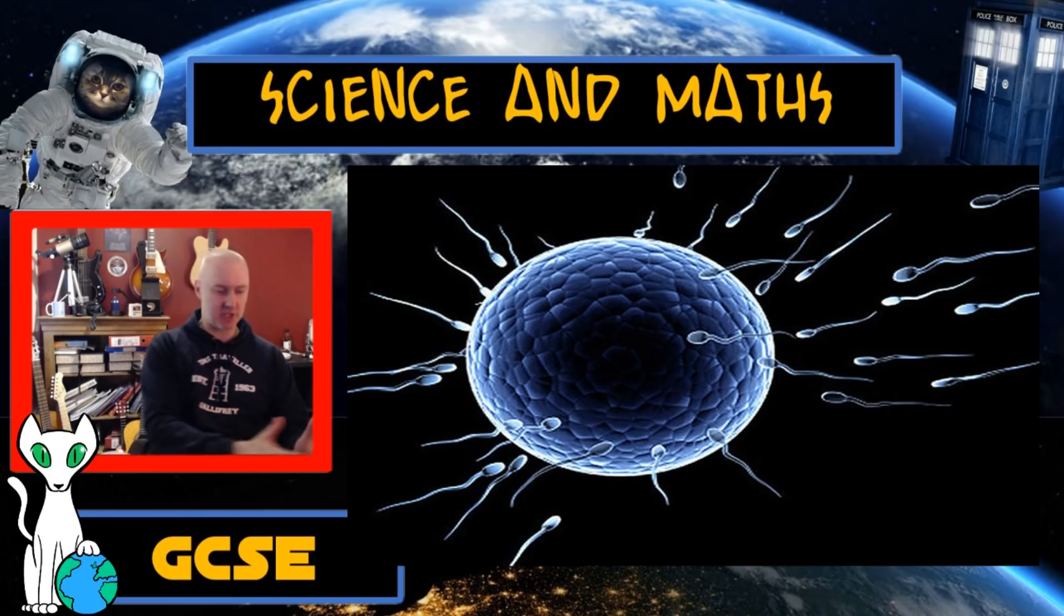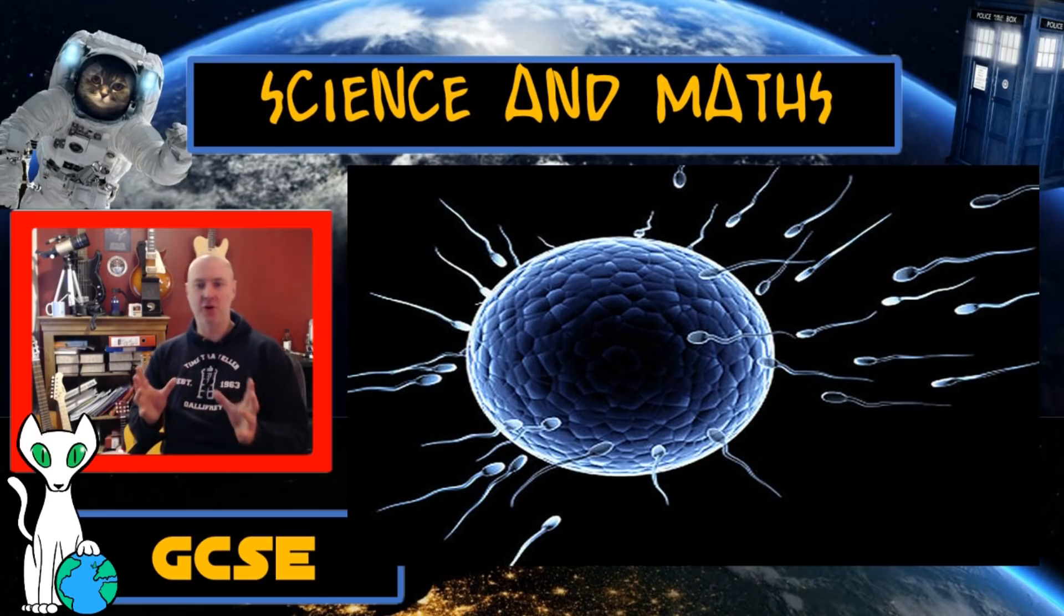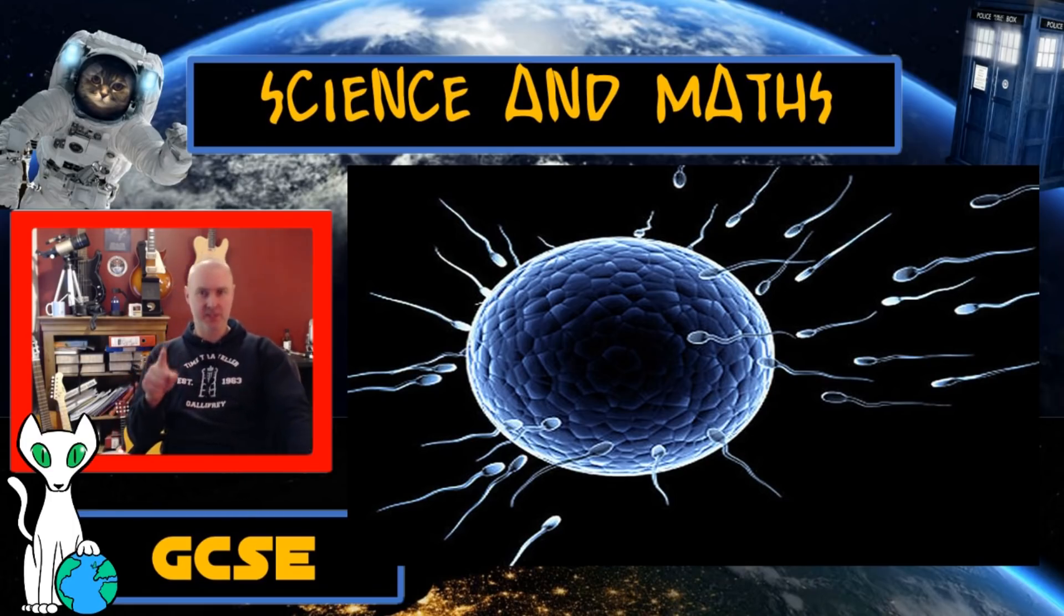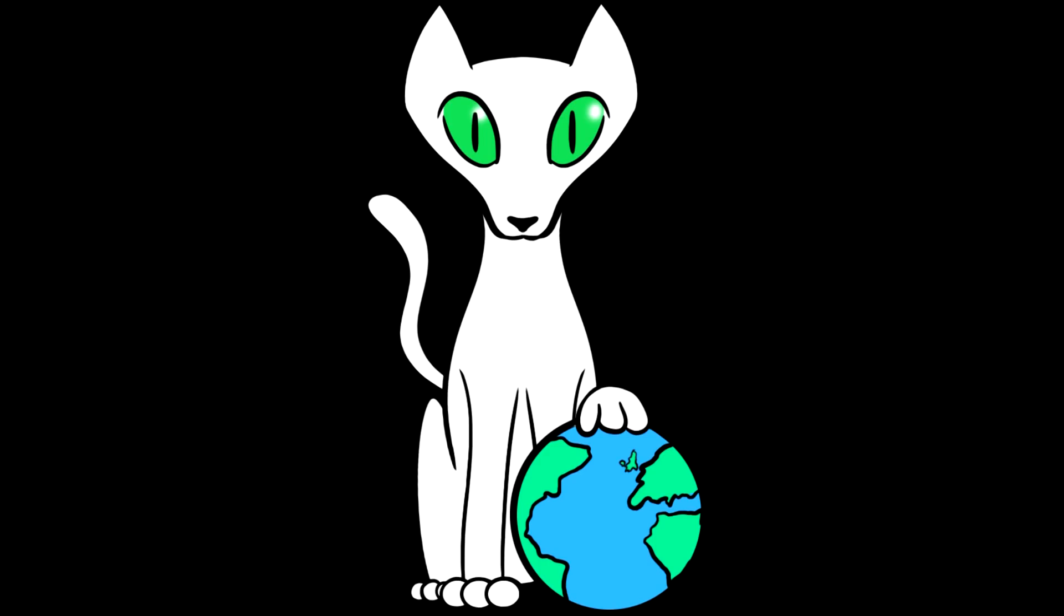So there must be a mechanism that allows that one cell to go from one to two to four to eight. And at the minute, that's what we're going to think of mitosis as. We're going to think of it as the mechanism that allows us to produce new cells. That will not be the definition we end up with. Stick around for the proper definition that you need to use. So mitosis is used for growth.